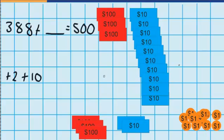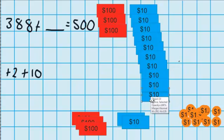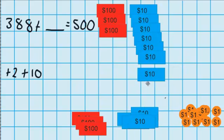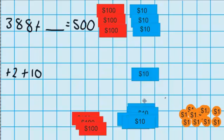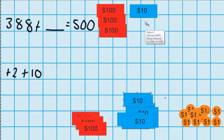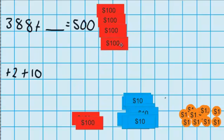Just like last time, I've got a problem — I now have ten $10 notes. So I'm going to have to swap those ten $10 notes for one $100 note. I'll do that quickly now, moving all the $10 notes and making a straight swap for one $100 note.